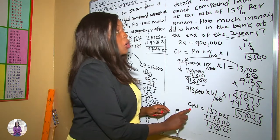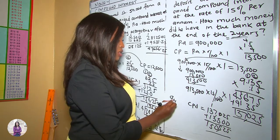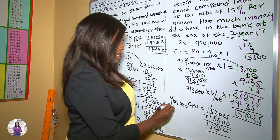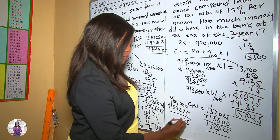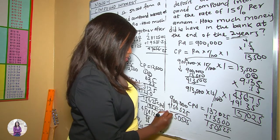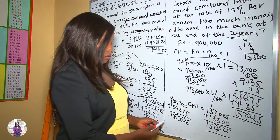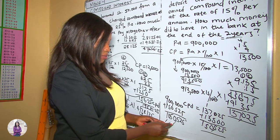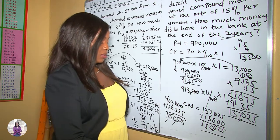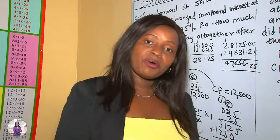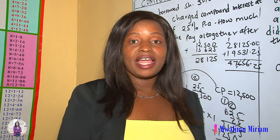Adding the total compound interest to the original deposit: 900,000 + 150,525 = 1,050,525 shillings. So at the end of the second year, there was 1,050,525 shillings in the bank. Thanks for watching — kindly remember to subscribe, press the notification bell, and share with your friends.